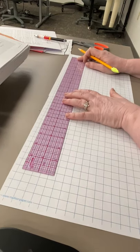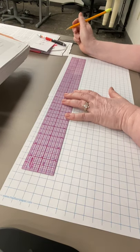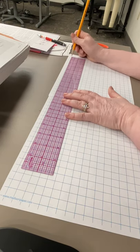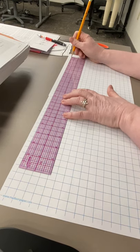So I'm going to start over on this side and I wrote down that my outseam is going to be 42. So I'm working in half scale. That's going to be 21.